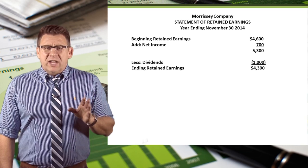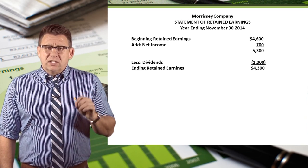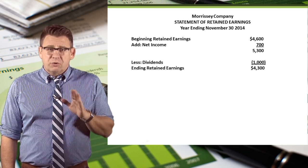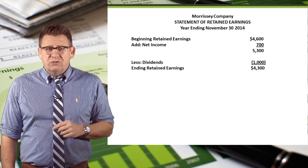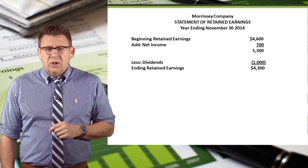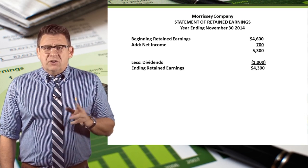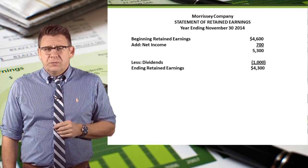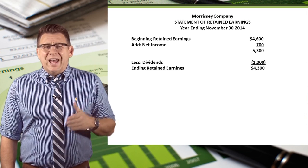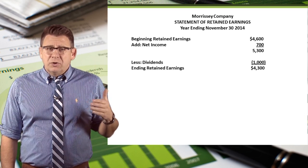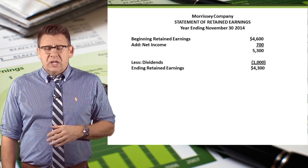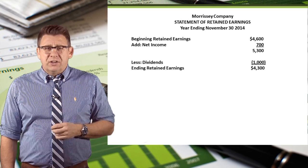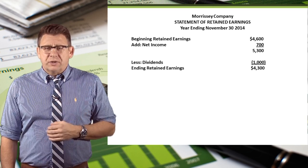The statement of retained earnings details the changes in retained earnings of a business for a period or range of time. Retained earnings from the adjusted trial balance is listed first. Then we add net income to increase retained earnings. Finally, we subtract dividends, which decrease retained earnings.